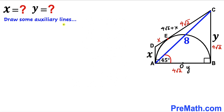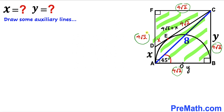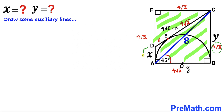We draw auxiliary lines to create right triangle CFD, which also gives us square ABCF. All side lengths of this square equal 4√2. The whole side AF is 4√2, segment AD is X, so the remaining segment FD is 4√2 − X.